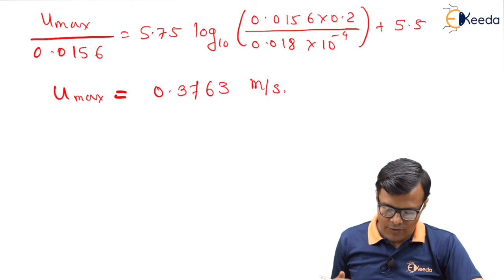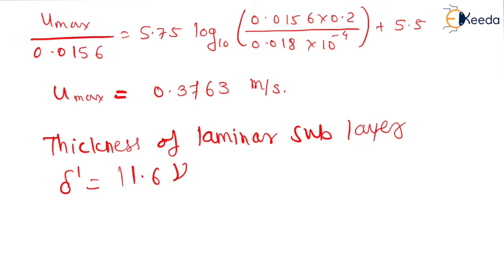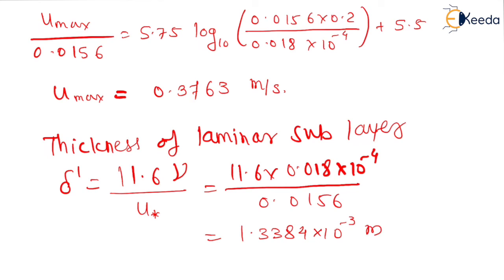And now last term remaining that is the thickness of laminar sublayer. Thickness of laminar sublayer can be calculated as δ' equals 11.6ν upon u*. Just putting the values, we will have equation as 11.6 × ν is 0.018 × 10⁻⁴ upon u* is 0.0156. That is equal to 1.3384 × 10⁻³ meters. If we want to calculate it in millimeters, it is 1.338 millimeters. Because we know that 1 meter equals 1000 millimeters. This is δ' that we want in this problem.